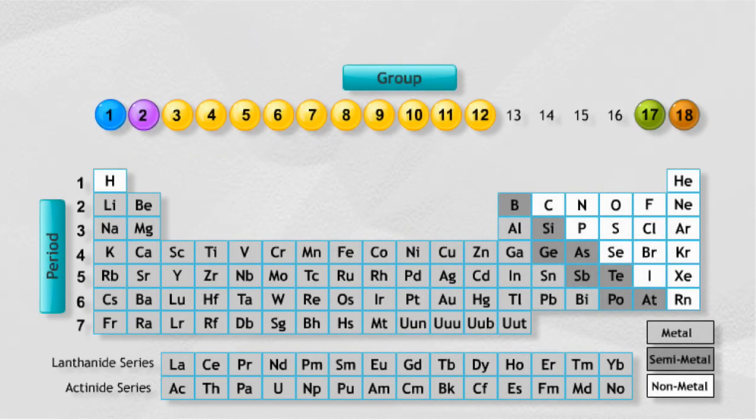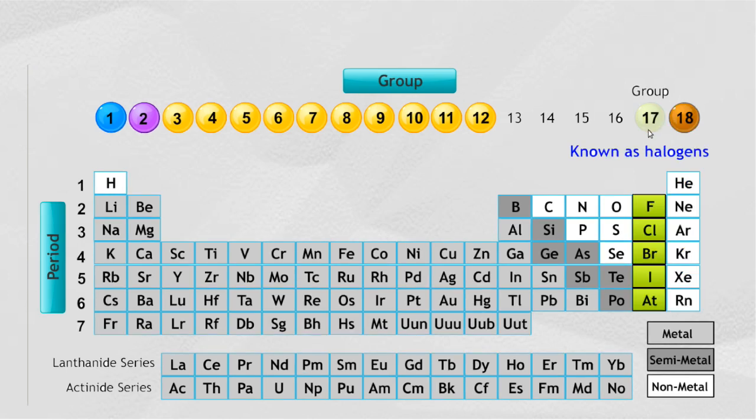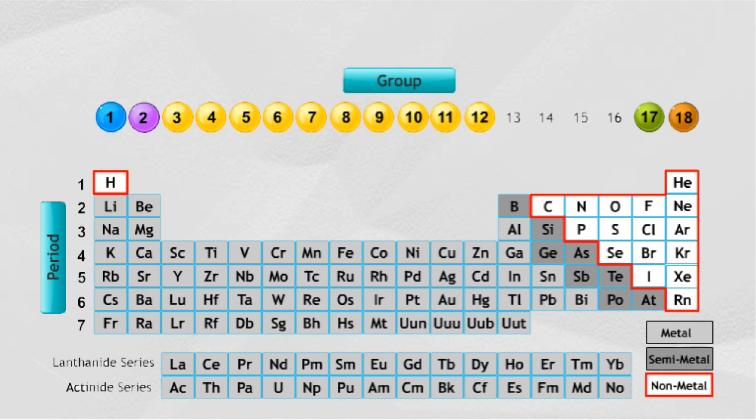The elements in the periodic table are often grouped according to their nature. The group on the right contains all the inert elements, also known as noble gases. To the left of these are the halogens. Left to these in a step pattern are nonmetals which also include hydrogen.